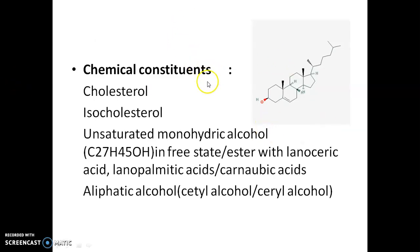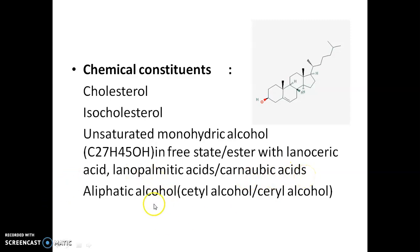Chemically, although we call it a fat, Ulfat is actually devoid of glycerol. Fatty acids are present, but the main ingredient is cholesterol. Here you can see the structure of cholesterol and isocholesterol. Unsaturated monohydric alcohols are also present in free state or sometimes form esters with lanoceric acid, lanopalmitic acid, or carnaubic acids. Some aliphatic alcohols such as cetyl alcohol and ceryl alcohol are also present. Overall, Ulfat is a complex mixture of esters and polyesters of different molecular weight alcohols and fatty acids.